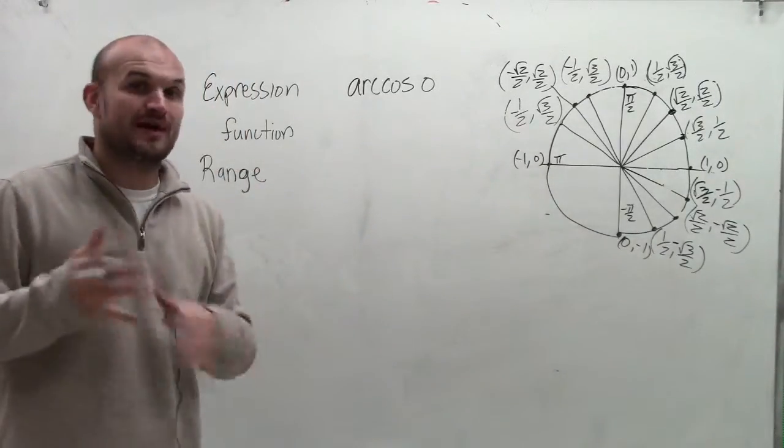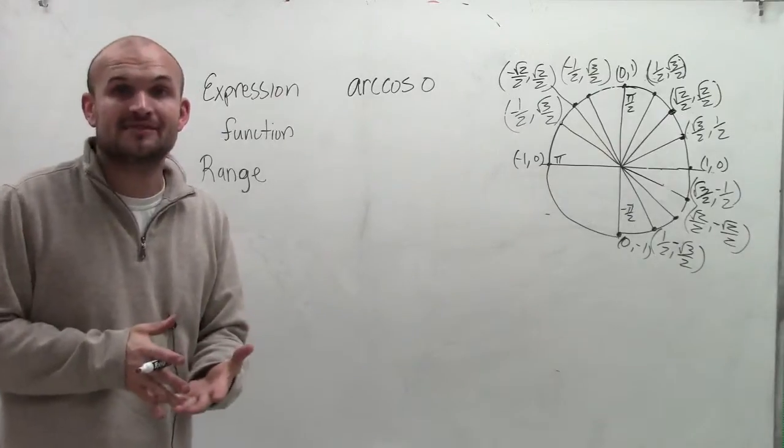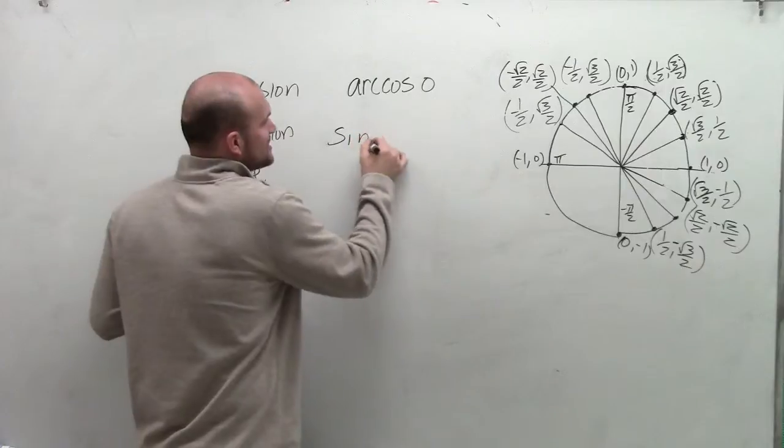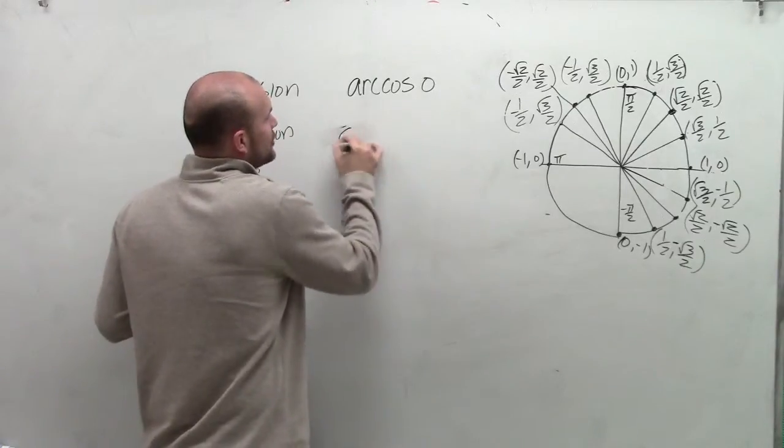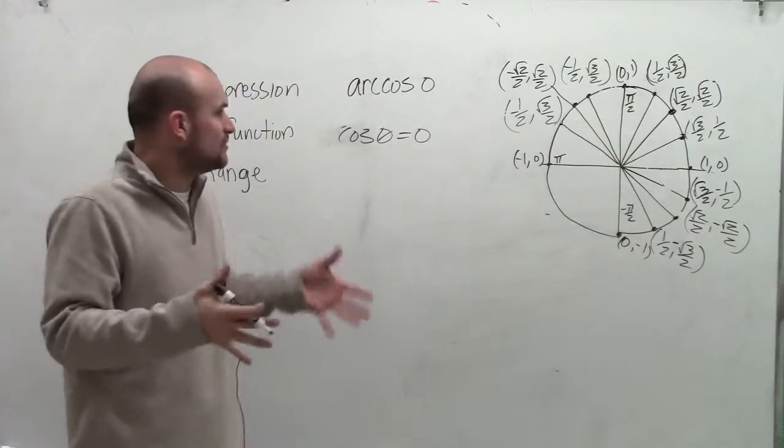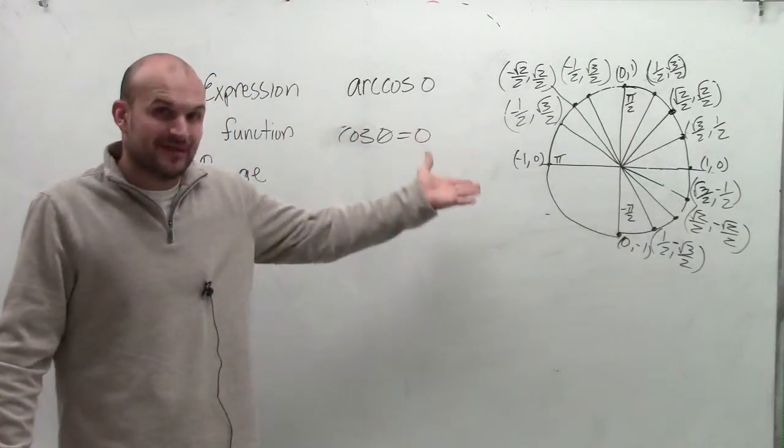To evaluate the arc cosine of 0, we need to determine what the function would be. The function says that the cosine of an angle is equal to 0. So what angle are we dealing with when the cosine of it equals 0?